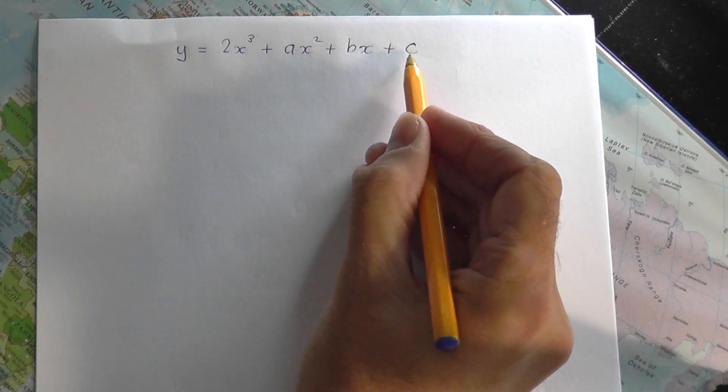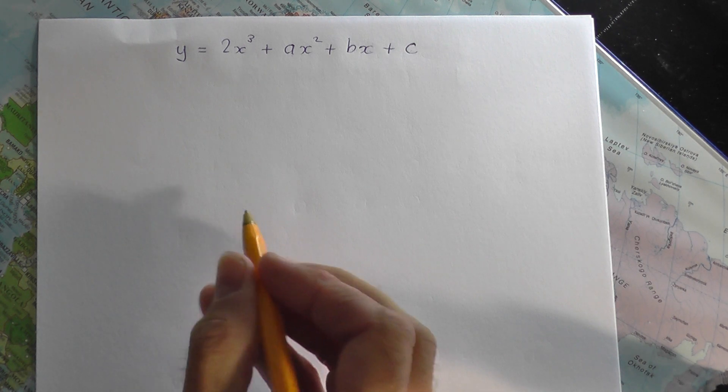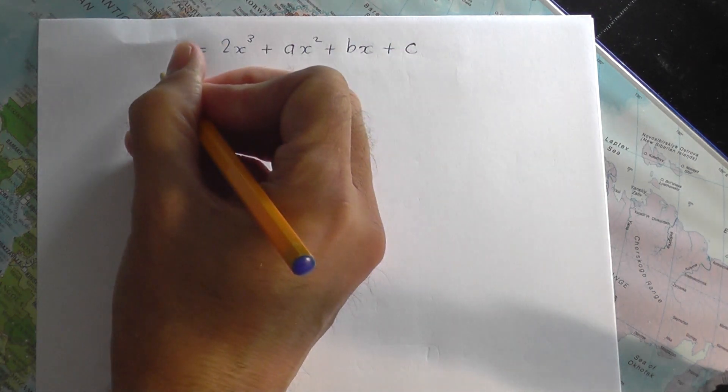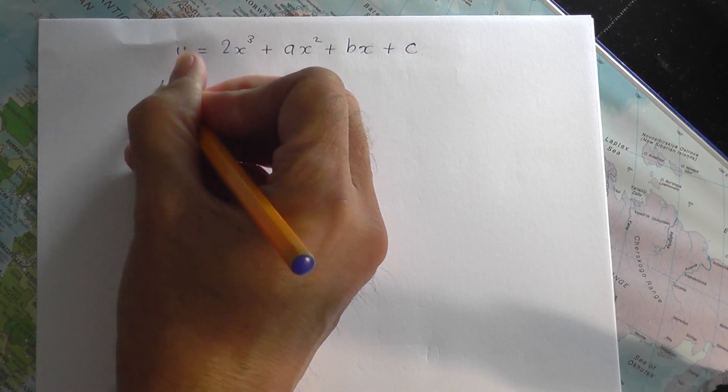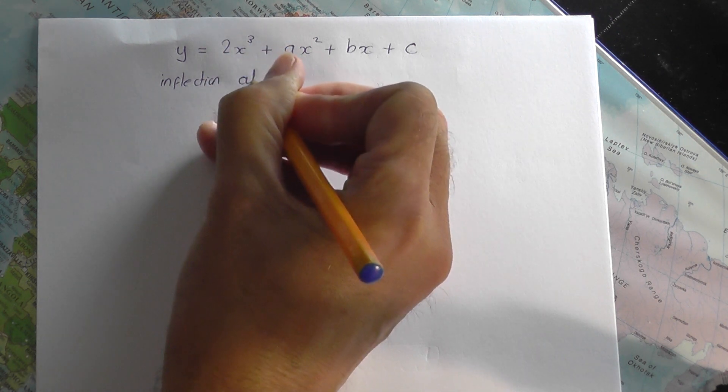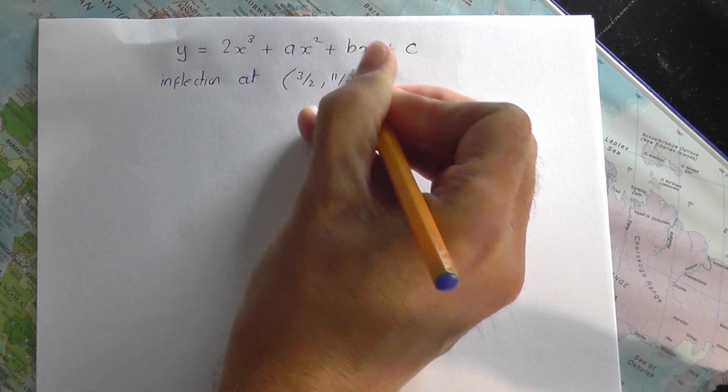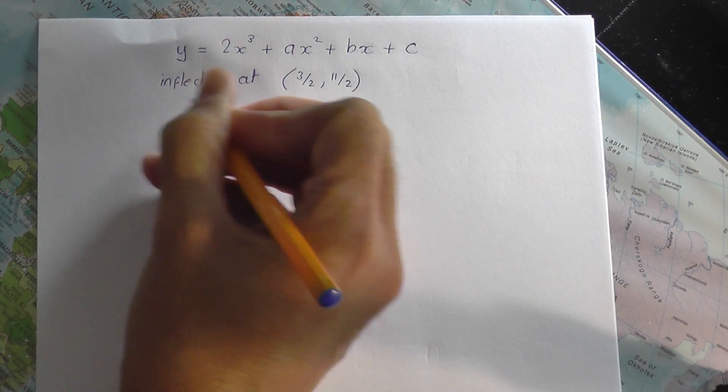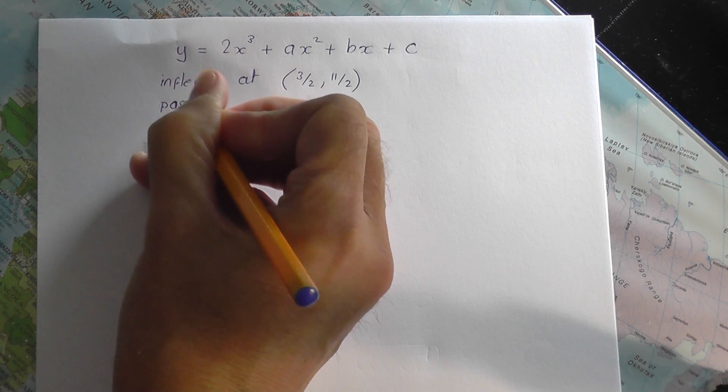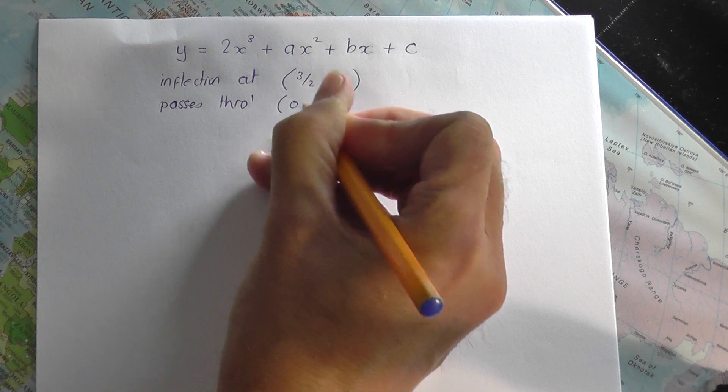So, if we take that as the information they give you about the curve, that's all you've got. They're also going to tell you, to help you get to what a, b and c are, they're going to tell you this. They're going to tell you that there's an inflection point at 3 over 2 comma 11 over 2. And as well as that, they're going to tell you one more bit of information, that the curve passes through another point, 0, 1.